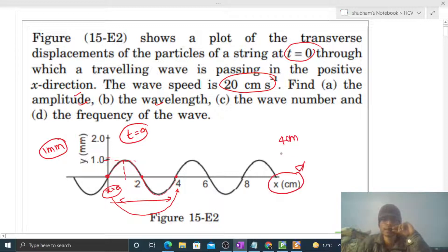Wave number k, that is equal to 2π divided by wavelength. So it will be 2π divided by wavelength is 4, so it will be π by 2 per centimeter. This is the value of wave number.